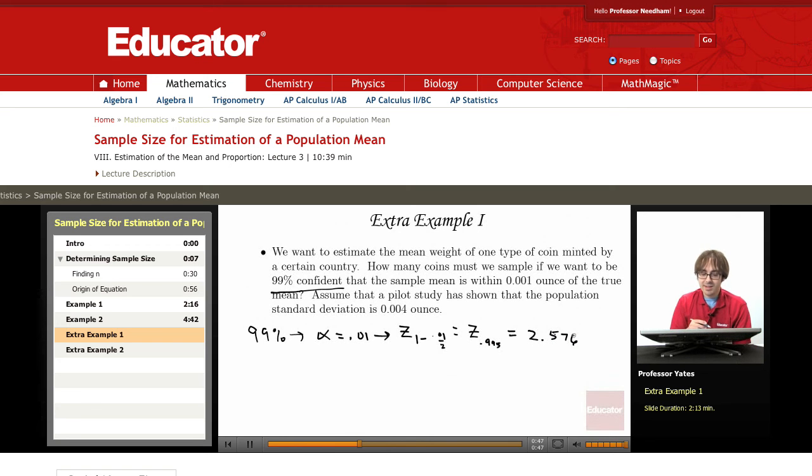That the sample mean is within .001 of an ounce. So e equals .001.